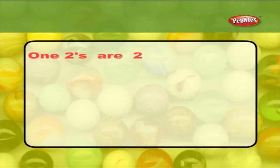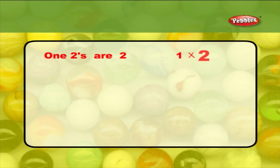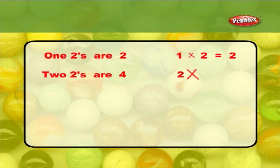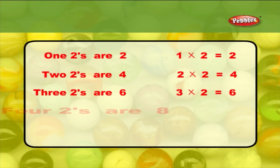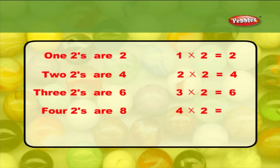Two tables. One twos are two. One into two is equal to two. Two twos are four. Two into two is equal to four. Three twos are six. Three into two is equal to six. Four twos are eight. Four into two is equal to eight.